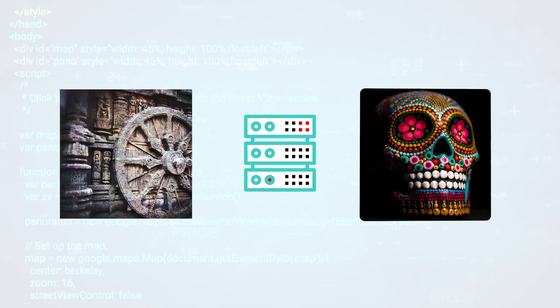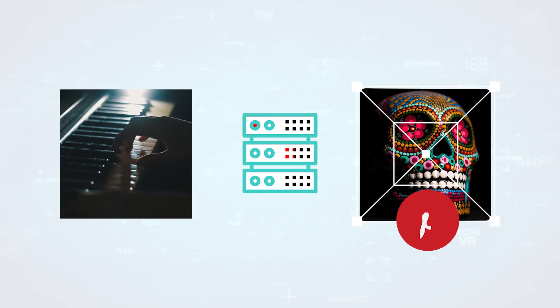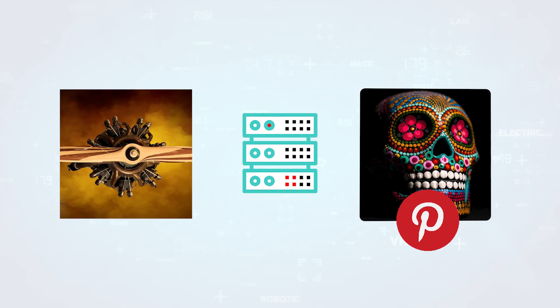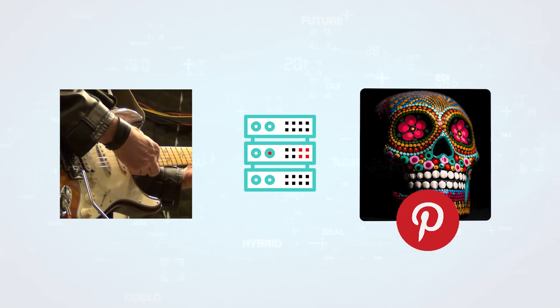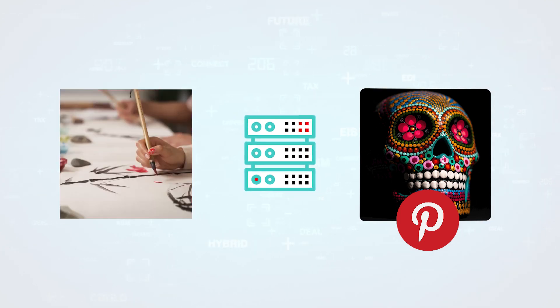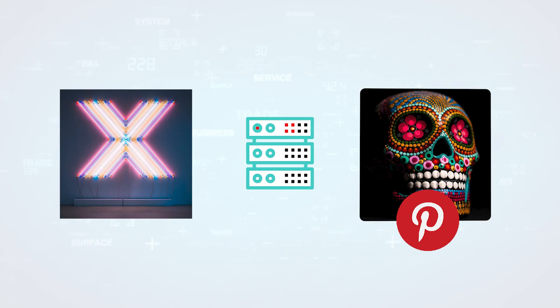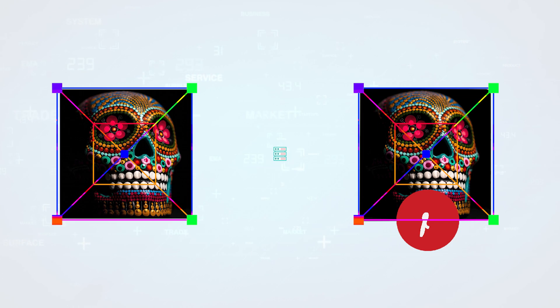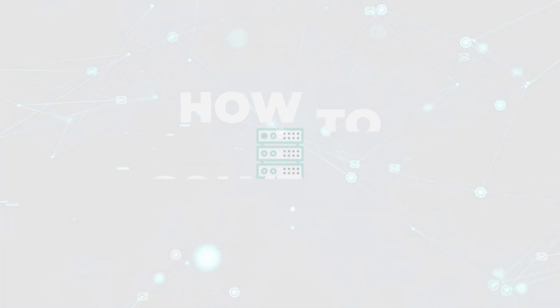It all starts with a bunch of images going into Pinterest. The number of images is in the order of billions, being processed at a rate of 200 images per second. And for each image, they want to find out if that same image or a slight variation had been used before at Pinterest. At a large scale, solving this problem in near real time can be challenging to say the least.